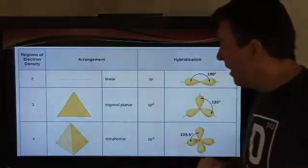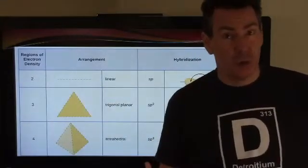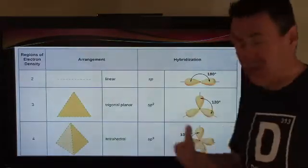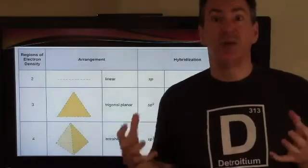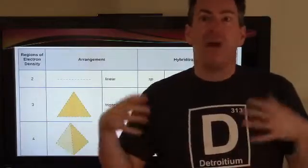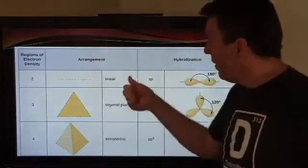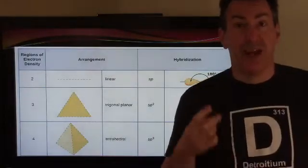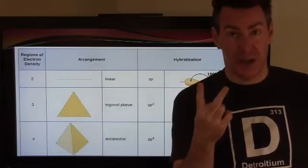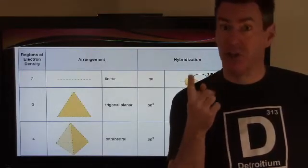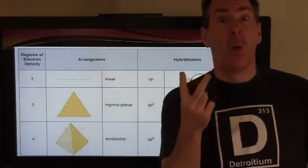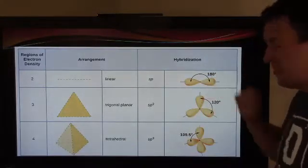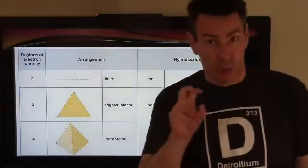If you just have two areas or two regions — going back to VSEPR theory — that's a linear arrangement. Those two areas, whether they're bonds to another atom, lone pairs, or radicals, align 180 degrees from each other. The hybridization with two areas requires two orbitals: you always start with an S and then add one P orbital, so the hybridization is SP.